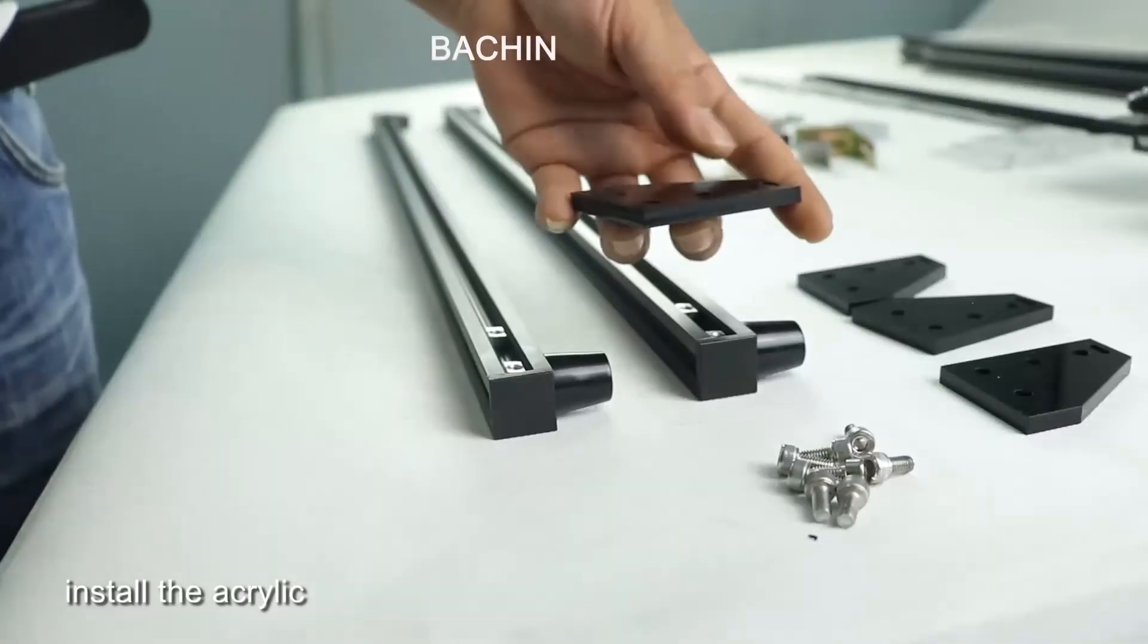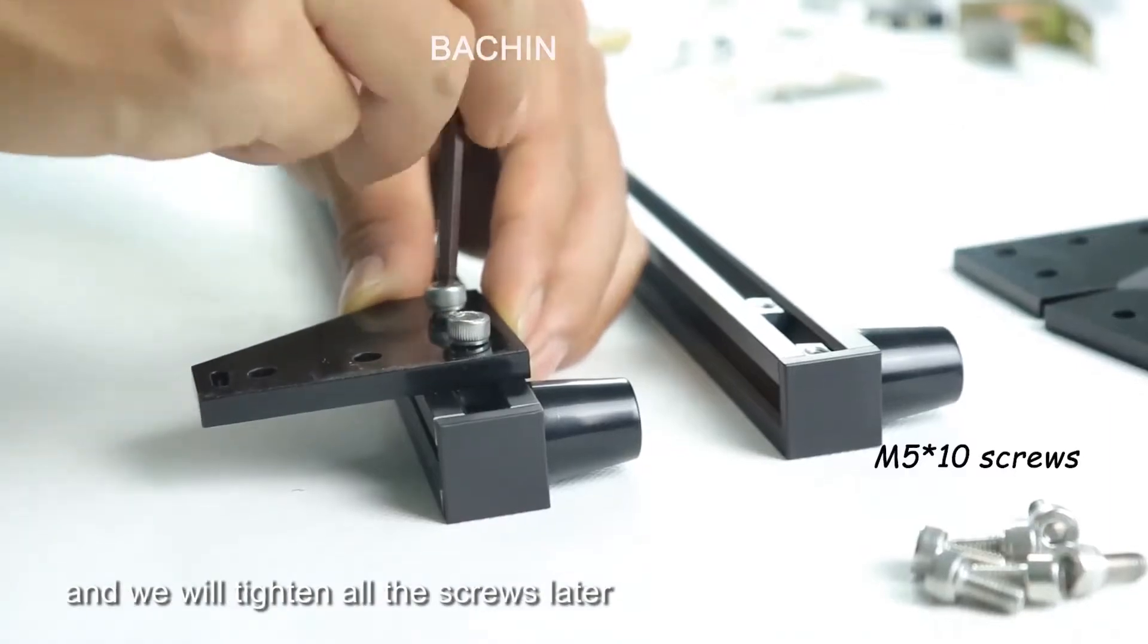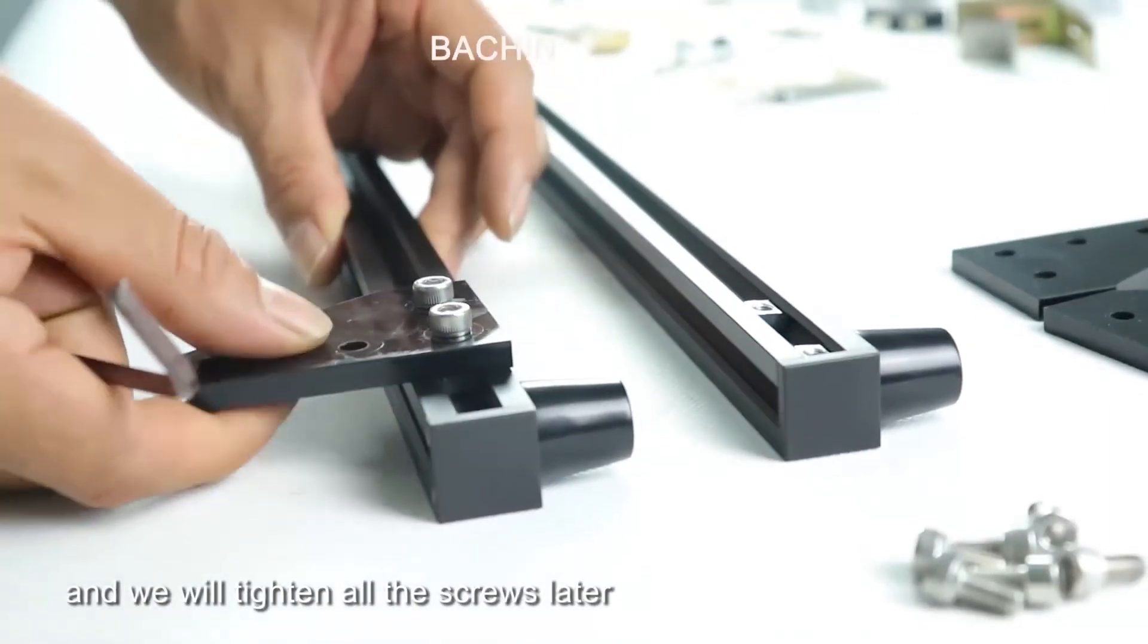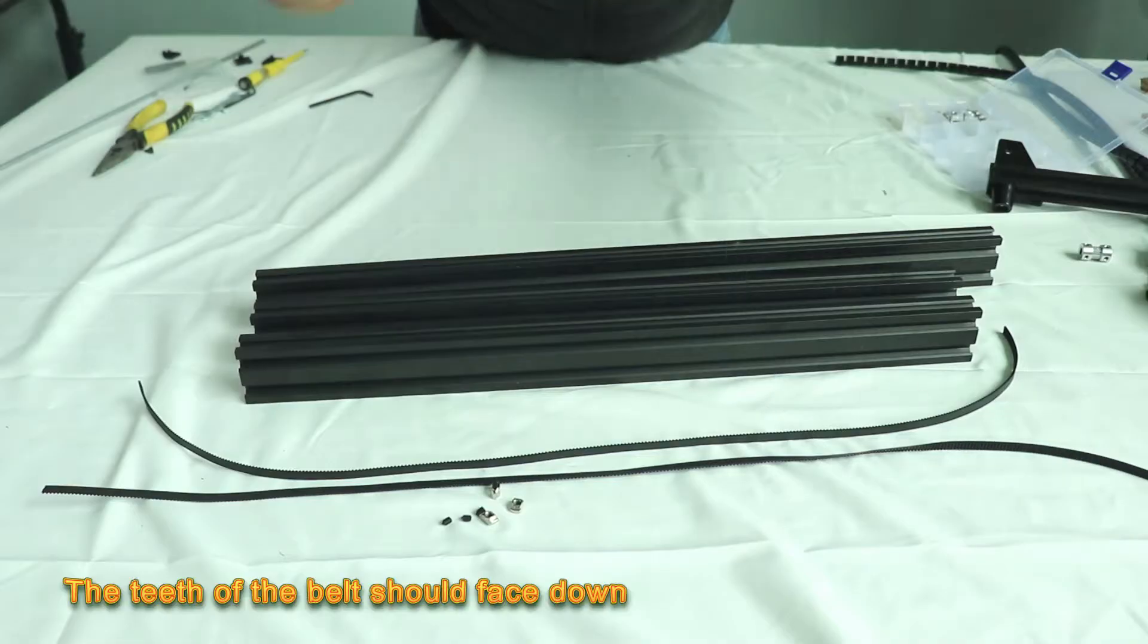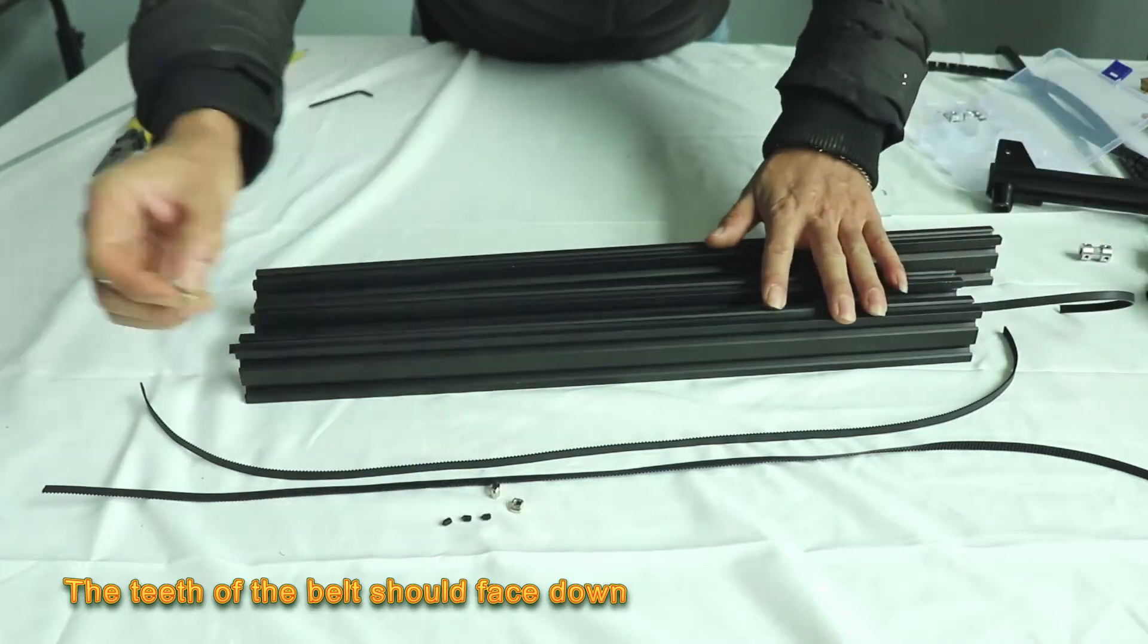Install the acrylic. You don't have to tighten it completely, and we will tighten all the screws later. Do the same to the other side. The teeth of the belt should face down.